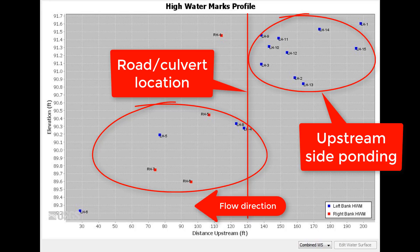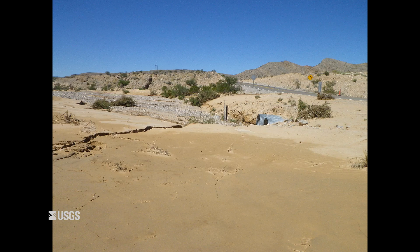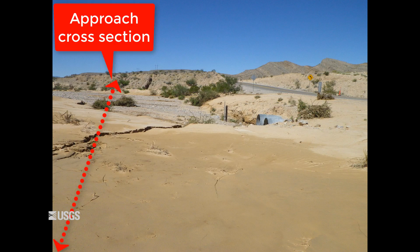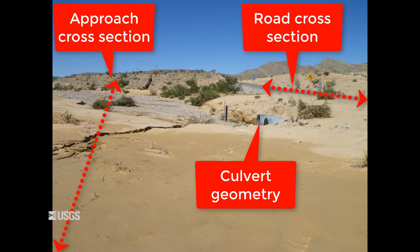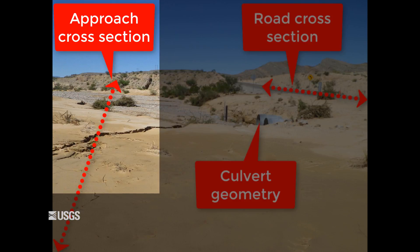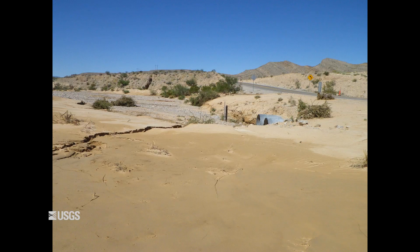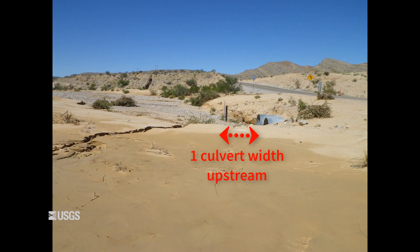You will need to survey the following items: 1) an approach cross section; 2) full culvert measurements and geometry; and 3) a cross section on the crest of the road. For the approach cross section, we know that for a regular culvert computation, the approach cross section is located at least one culvert width upstream, and for a regular road overflow computation, the approach is three to four times the depth of water flowing over the road.